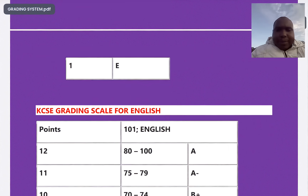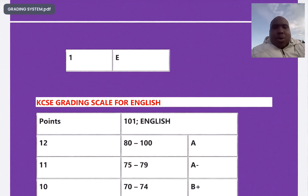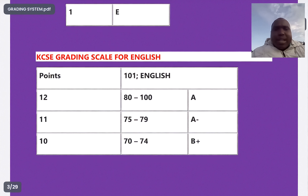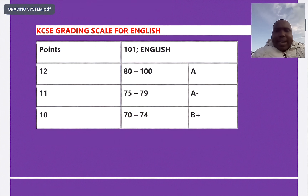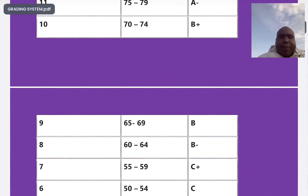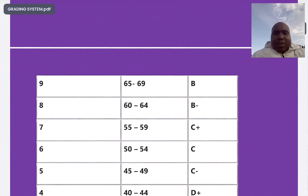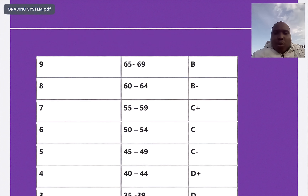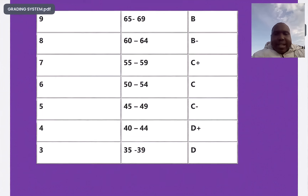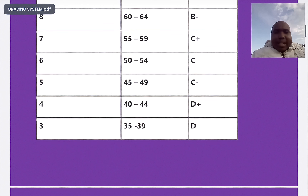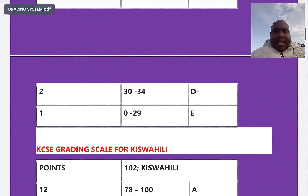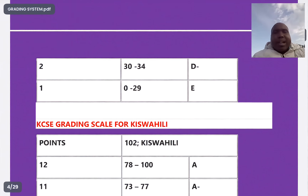For English, A begins from 80 to 100, A minus 75 to 79, B plus 70 to 74, B plain 65 to 69, B minus 60 to 64, C plus 55 to 59, C plain 50 to 54, C minus 45 to 49, D plus 35 to 39, D plain 30 to 34, D minus 0 to 29. If you score less than 30 in English you will have an E.